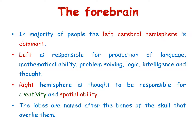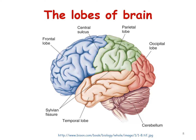The lobes are named after the bones of the skull that overlie them. 52 structurally distinct areas have been identified by Brodmann and are called by number. The central sulcus and the lateral fissure, also called the Sylvian fissure, divide the brain into the frontal, parietal, and temporal lobes. The calcarine fissure divides the rest of the brain from the occipital lobe. The cerebellum lies posterior to the cerebrum and sits on the brain stem.